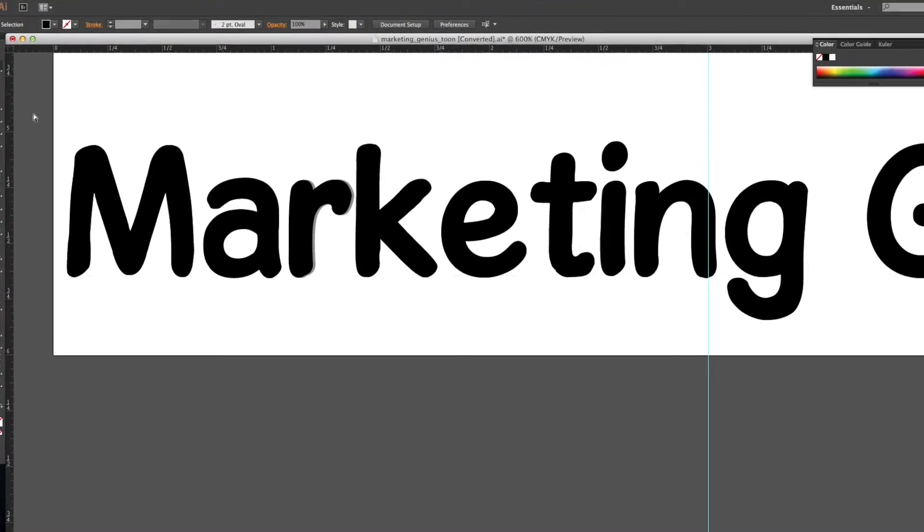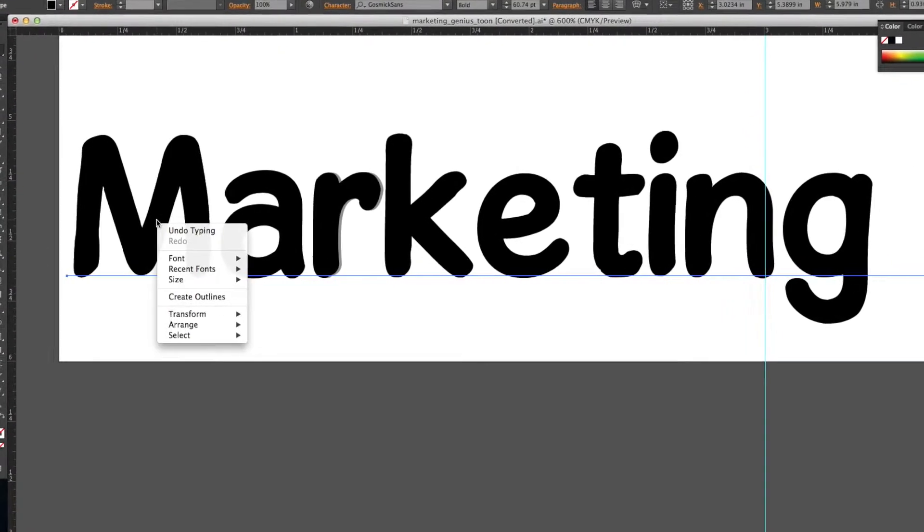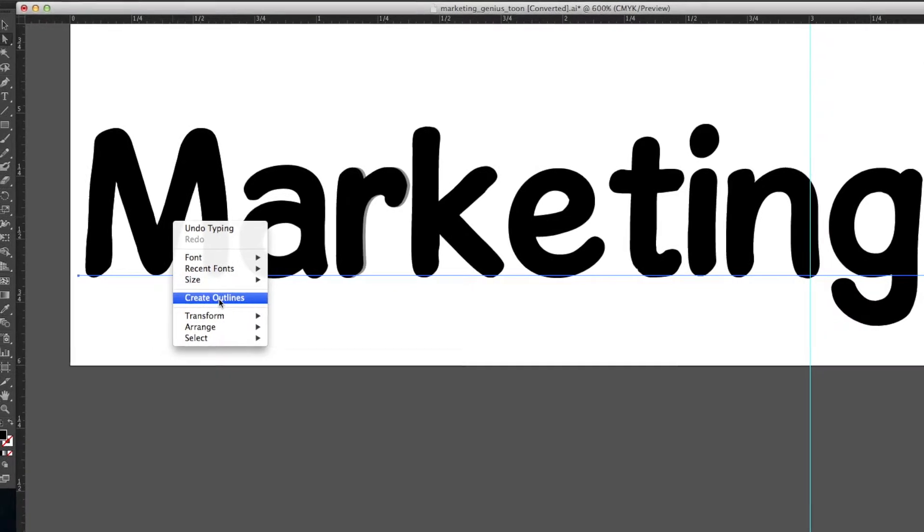The next step is to convert text. To make sure your font prints correctly, convert to outlines. Doing this is as simple as selecting your text in Illustrator and right-clicking, then clicking Create Outlines.